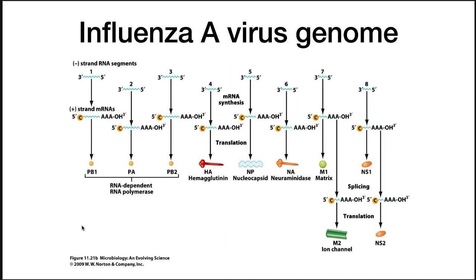To emphasize what the segments are doing: PB1, PA, and PB2 make the RNA-dependent RNA polymerase. Then there's HA hemagglutinin, a nucleocapsid segment, neuraminidase, an M1 matrix protein, an ion channel, and then NS1 and NS2.